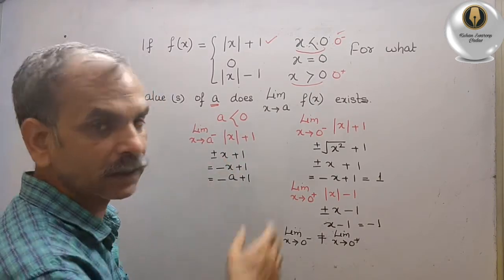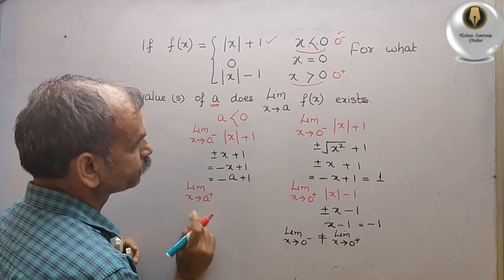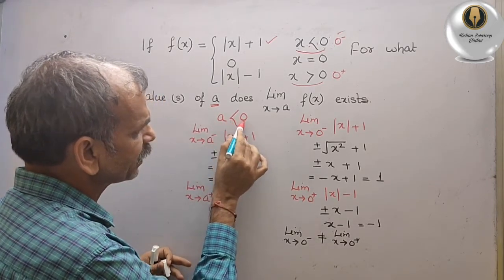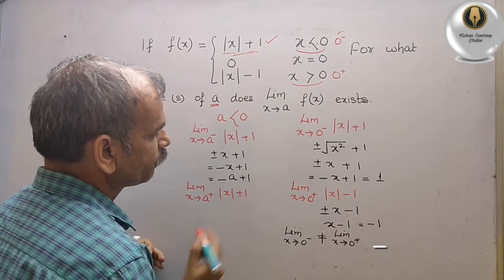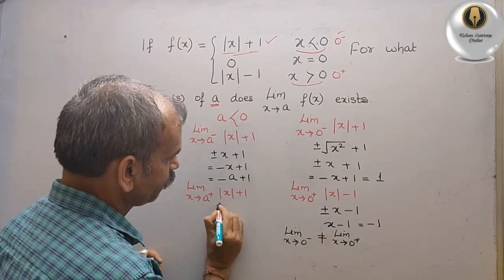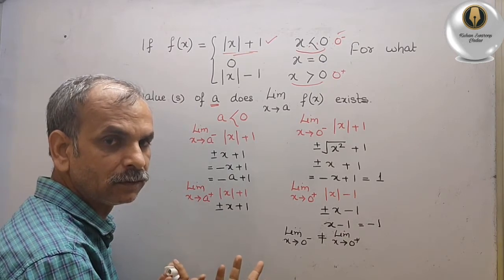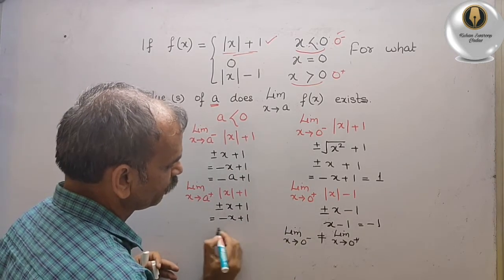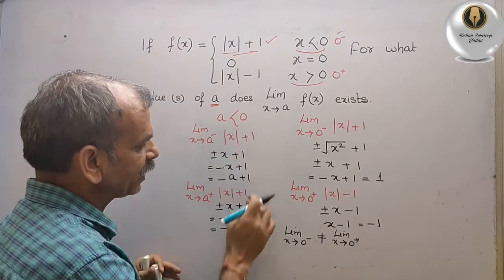Next, we take the limit as x tends to a plus. For a plus, since a is less than 0, we still use the same piece of the function — modulus of x plus 1 — and since a is less than 0, we again take minus x plus 1. Substituting a gives minus a plus 1. Both one-sided limits are equal, so the limit exists for all a less than 0.